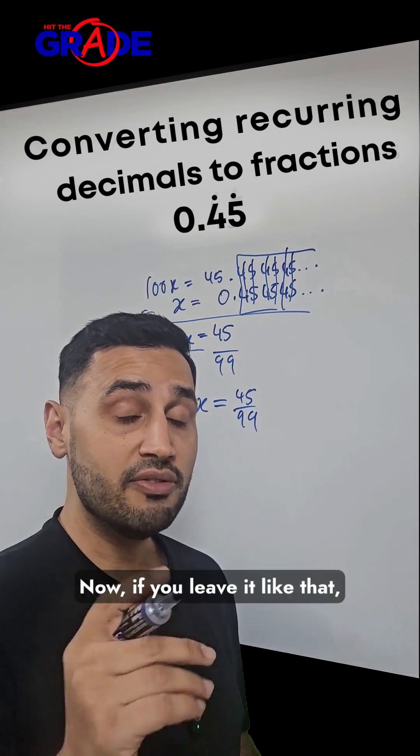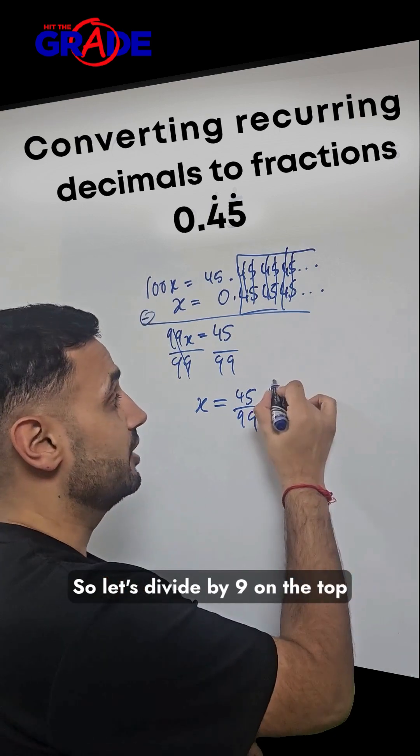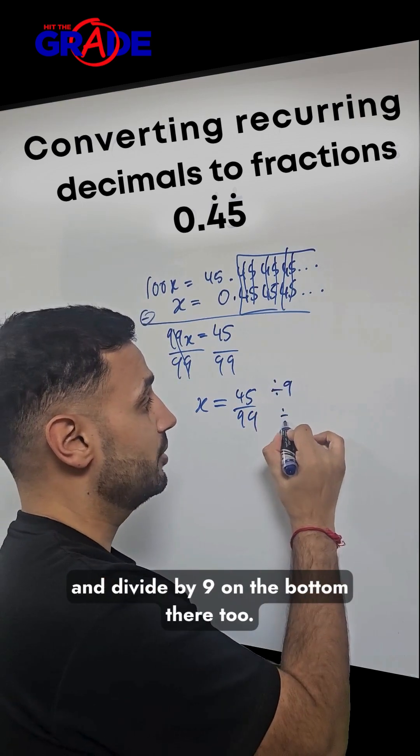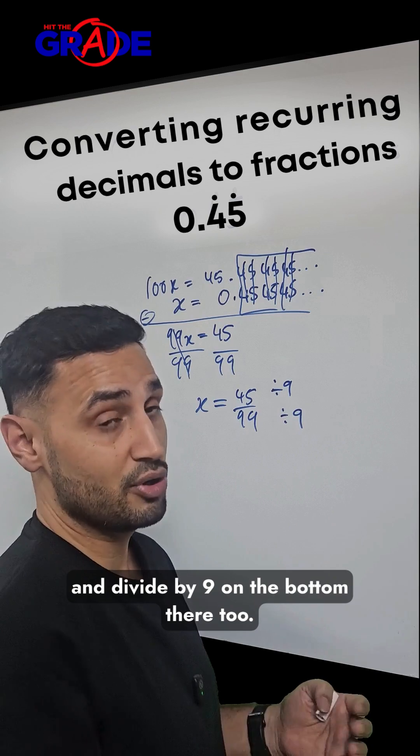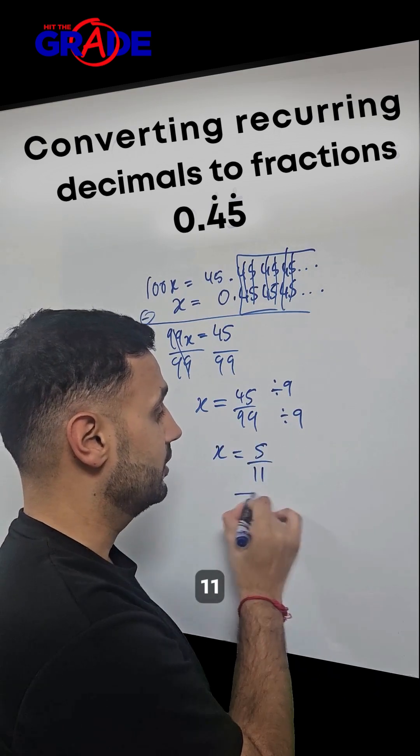Now, if you leave it like that, you'll probably lose some marks. Don't forget to simplify your fractions. Let's divide by 9 on the top and divide by 9 on the bottom. So x equals 5 over 11.